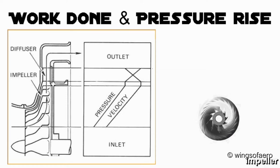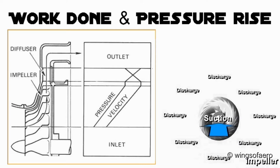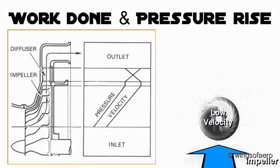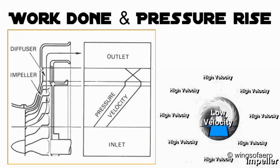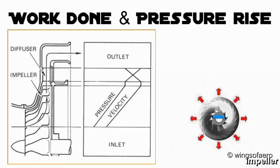As the impeller rotates, the fluid is drawn into the blade passage at the impeller eye. At the center of the impeller, the inlet flow is axial, and the fluid enters the impeller with very little radial or tangential component of velocity, flowing outward in the direction of the blades. The fluid receives energy from the impeller while flowing through it and is discharged with high pressure and velocity into the casing.